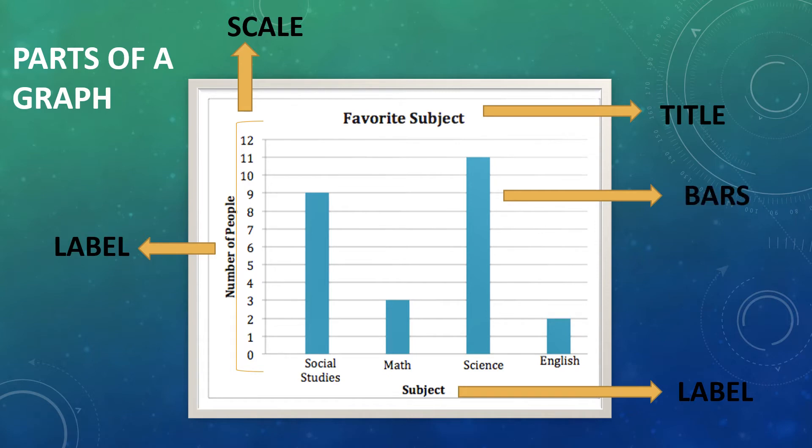Please note, the intervals can change. For example, if I take the interval of 5, my scale will be 0, 5, 10, 15, and so on.